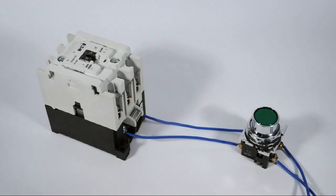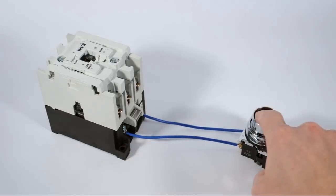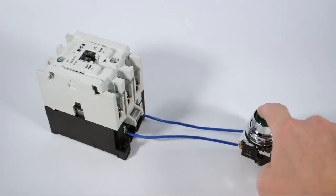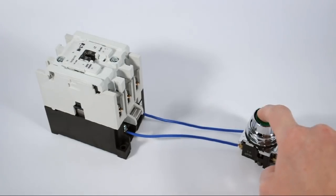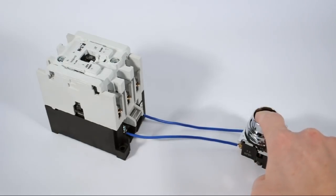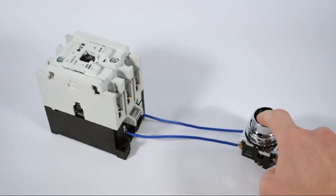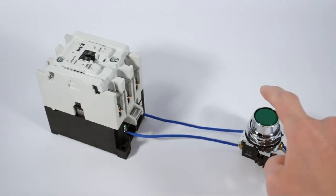What I've done here is I've connected a green start button to control power and connected the other side of the push button to the coil inside of one of Eaton's Freedom Series contactors. When I push the start button, you can see the small black rectangle on top of the contactor move up and down. That is the top of the armature showing through, which is moving inside the contactor. You can also hear the contacts inside opening and closing, as well as the hum of electricity flowing through the contactor coil.